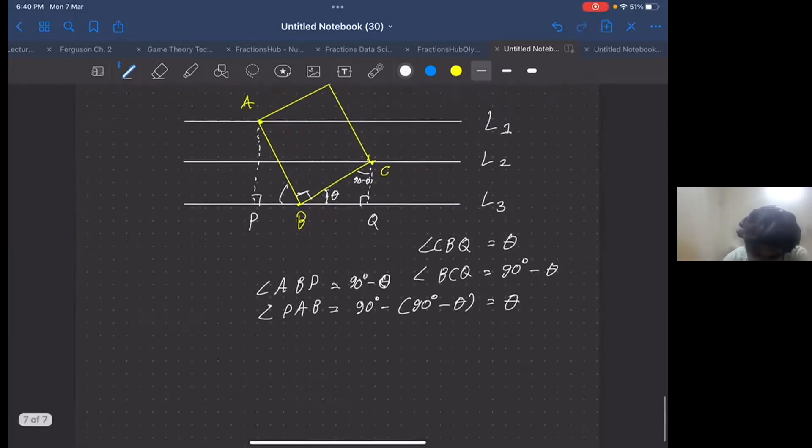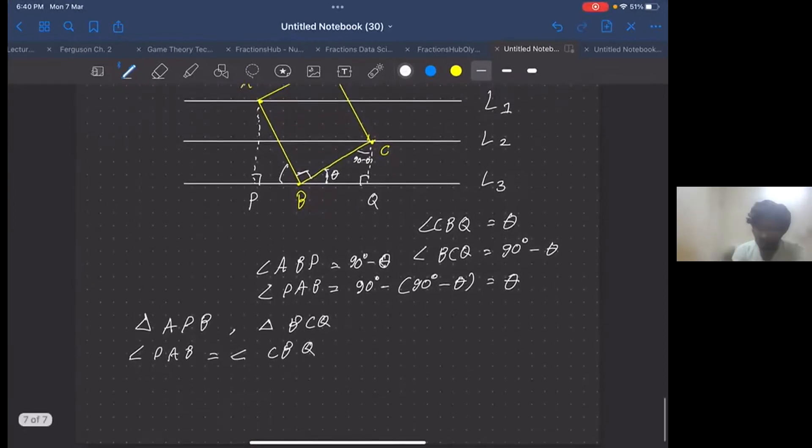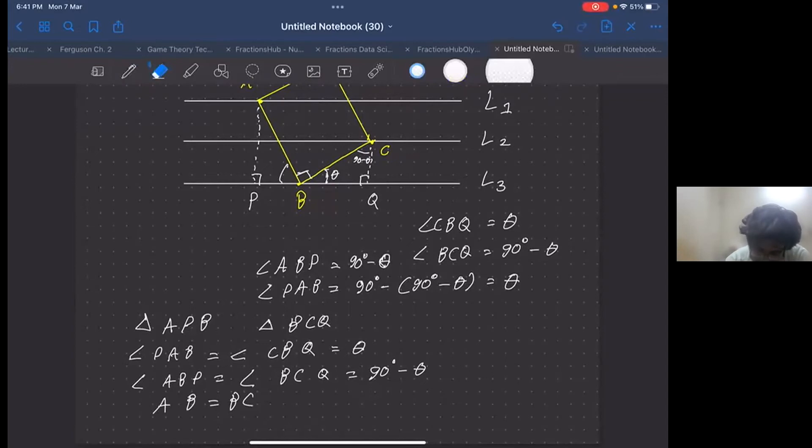Now look at the triangles APB and BCQ. We have already shown that angle PAB equals angle CBQ, both equal to theta. And we have also shown that angle ABP equals angle BCQ, both equal to 90 degrees minus theta. And we know it's a square, so AB equals BC. Therefore, we can say that these two triangles are congruent by ASA congruency.